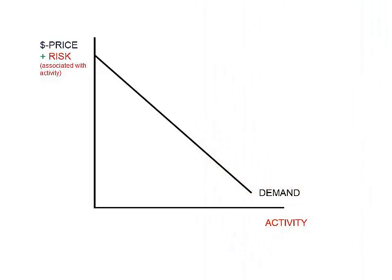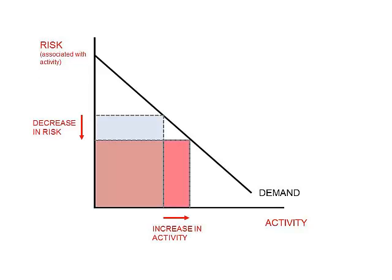This notion can be seen in these diagrams. Here we have that the demand for the activity depends on the monetary price plus the risk. If we keep the monetary price constant, then demand depends on the risk of the activity only, and when the risk decreases, the quantity demanded of this activity increases. If we understand these things, we can start to think about many policy issues like a true economist.